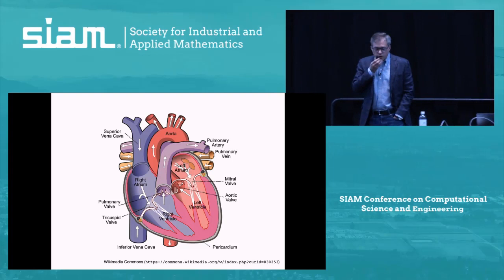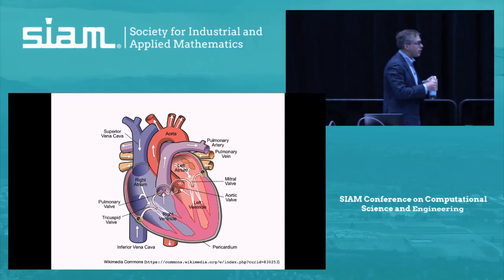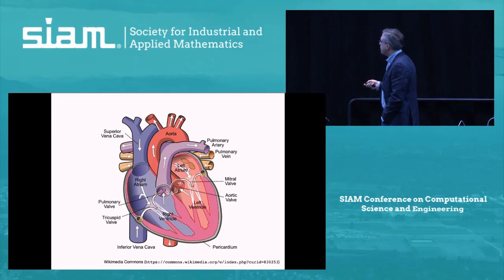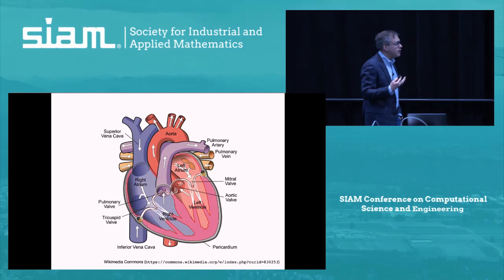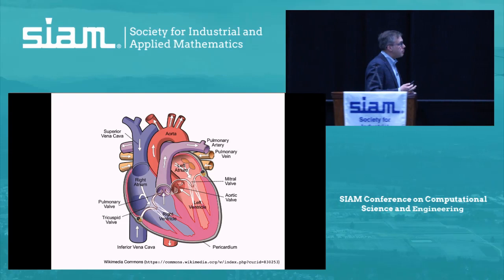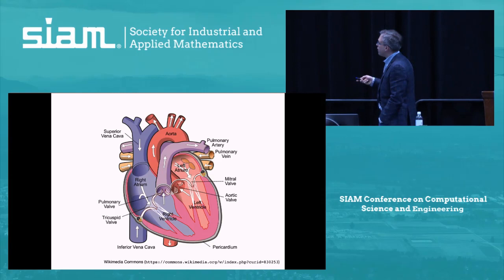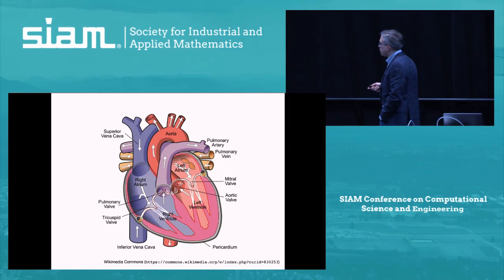In the time remaining, I want to tell you about some things we're doing in modeling the heart. The heart has four chambers: two upper chambers, the atria — right atrium and left atrium — and two ventricles — right ventricle and left ventricle. The atria get blood into the ventricles; the left ventricle pumps oxygenated blood throughout the body; the right ventricle sends de-oxygenated blood back to the lungs. Each chamber has a valve: on the left side, the mitral valve between atrium and ventricle, and the aortic valve at the outflow. The corresponding structures on the right are the tricuspid valve and the pulmonary valve.